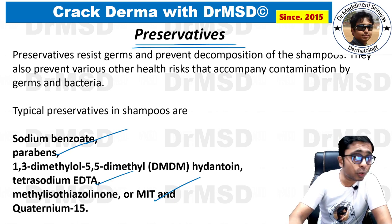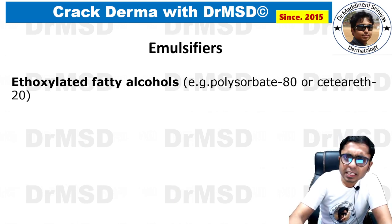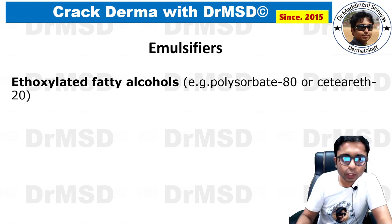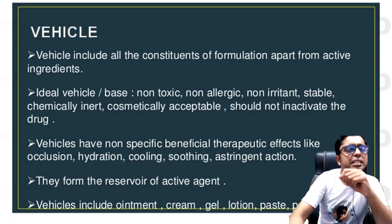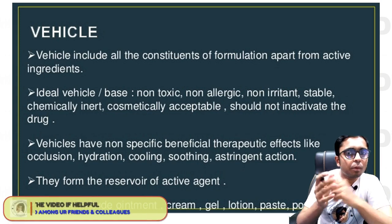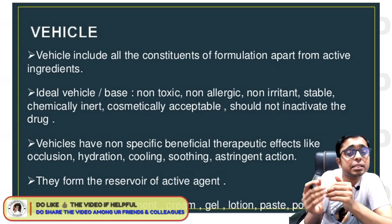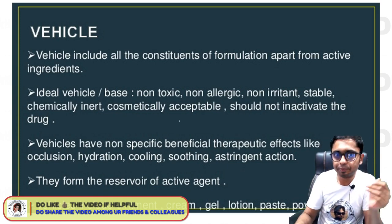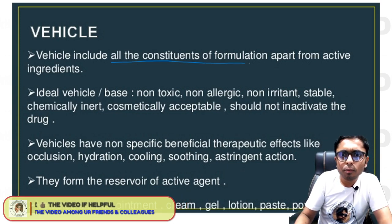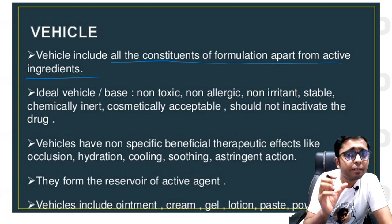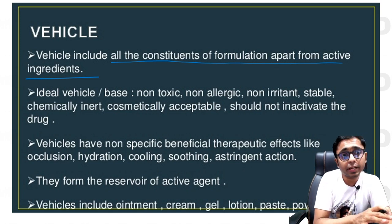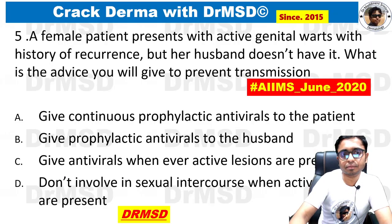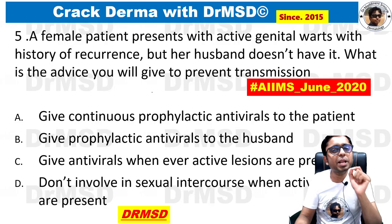Emulsifiers are basically fatty alcohols that help two different liquids mix with each other. The vehicle in a skincare product is the component that releases active ingredients onto the skin — it includes all constituents of the formulation apart from the active ingredients. For example, a topical steroid cream contains not only the steroid but also vehicle molecules.